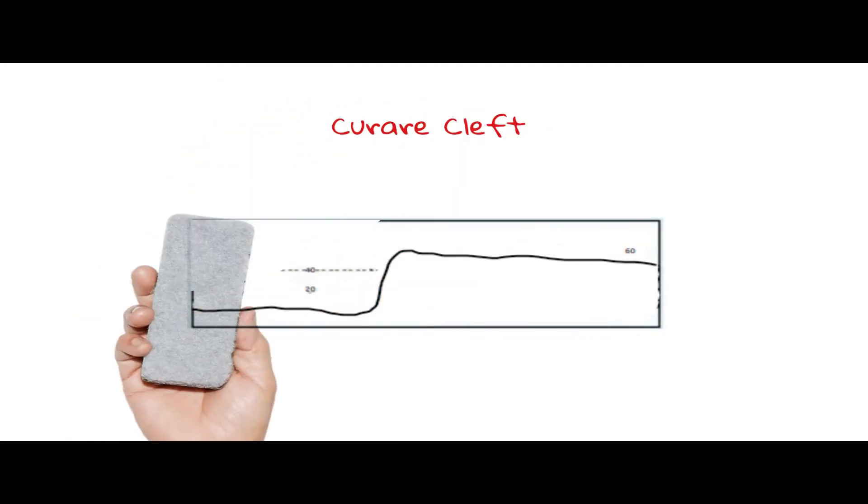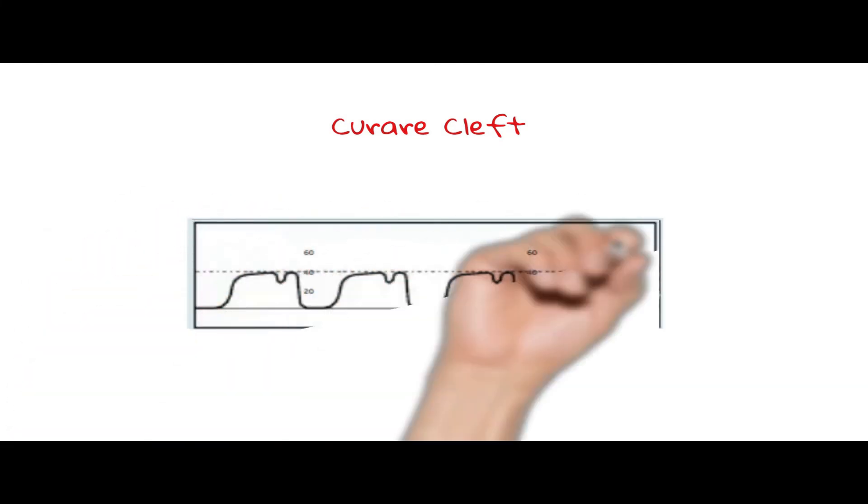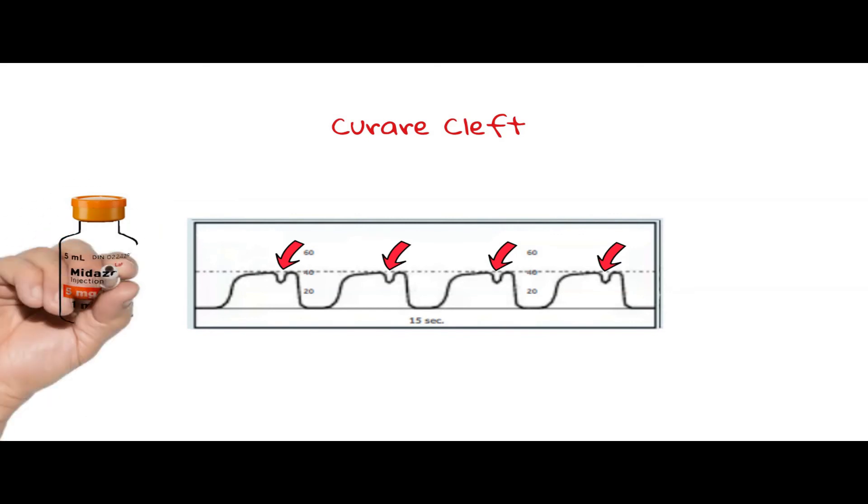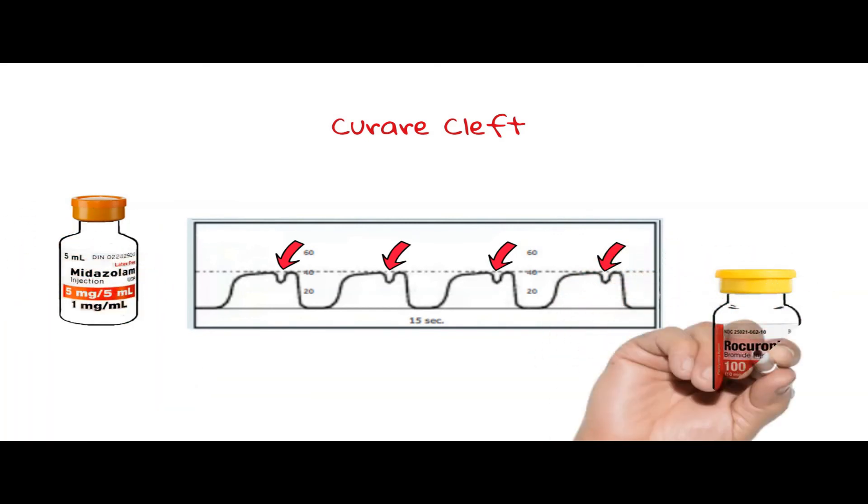The curare cleft is seen in the phase 3 alveolar plateau when a patient is being ventilated and attempts a spontaneous breath during the exhalation phase. It is seen as a slight momentary reduction in measured CO2. The curare cleft may be interpreted as fair warning that sedation is insufficient or that the paralytics have worn off.